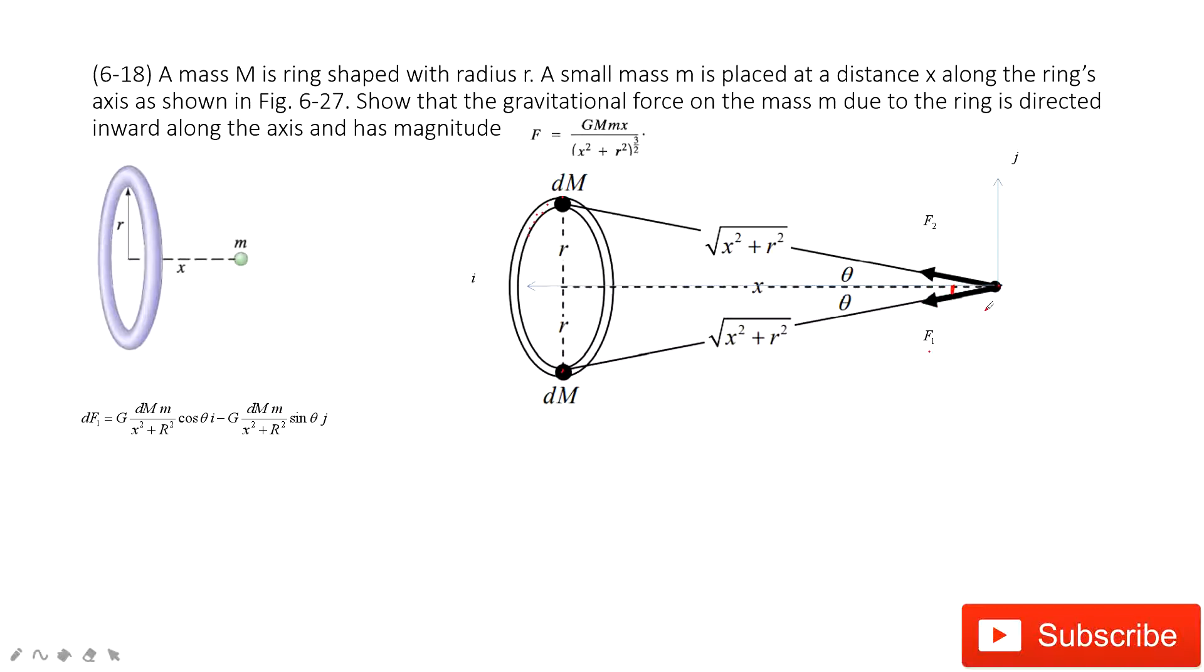And then look at the j component. It projects as j component with negative sign, so negative sine theta.